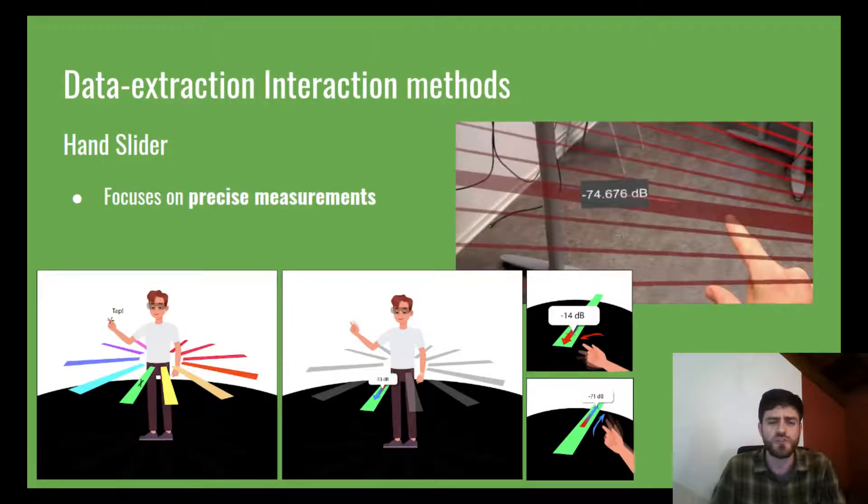In order to extract data from the visualizations, we came up with three different interaction methods to be tested. The first one is called hand slider, which focuses on more precise readings.